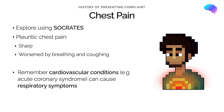Chest pain is another key symptom to cover in a respiratory history. We can use the SOCRATES framework to explore it in more detail. Patients with respiratory disease such as a pulmonary embolism, or inflammation of the pleural lining such as pleurisy following a chest infection, may present with pleuritic chest pain — often described as sharp and worsened by breathing and coughing. It's also worth remembering that cardiovascular conditions, such as acute coronary syndrome or myocardial infarction, can present with respiratory symptoms including chest pain and breathlessness.